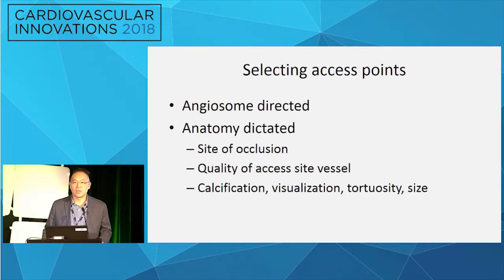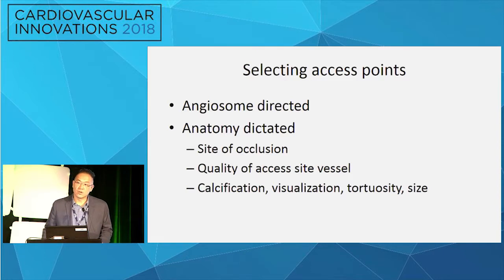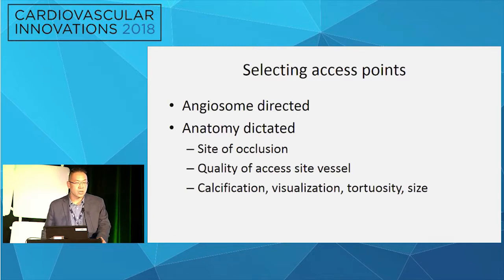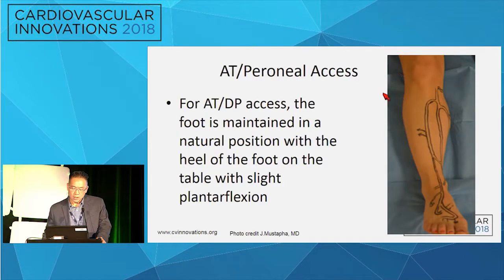Selecting the access point is somewhat common sense. It's angiosome-directed ideally. So if you have an ulcer on the bottom of the foot, you're going to go after the posterior tibia. On a practical level, sometimes it's anatomy dictated. It depends on the site of occlusion, the quality of the access vessel - is it calcified, what's the size, is it visualized under ultrasound, is it tortuous. You kind of have to take what you're given.